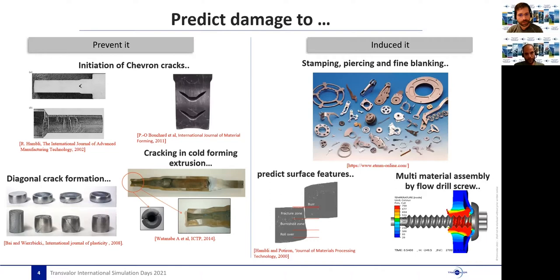On the other hand, damage and fracture can be desired in order to cut or perforate sections of the material, to obtain specific shapes or create joints. In this case, prediction of damage evolution is paramount in predicting the necessary energy to be applied to the system, as well as to predict the geometrical aspect quality.